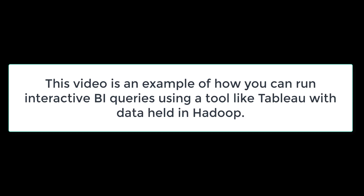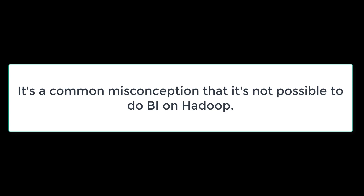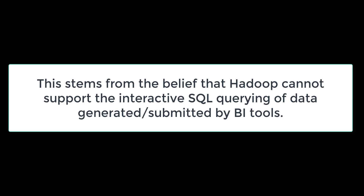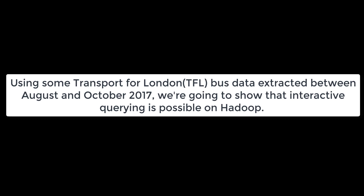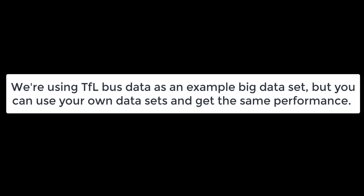This video is an example of how you can run interactive BI queries using a tool like Tableau with data held in Hadoop. It's a common misconception that it's not possible to do BI on Hadoop. This stems from a belief that Hadoop cannot support interactive SQL querying of data generated or submitted by BI tools. Using some Transport for London, aka TFL, bus data extracted between August and October 2017, we're going to show that interactive querying is possible on Hadoop.